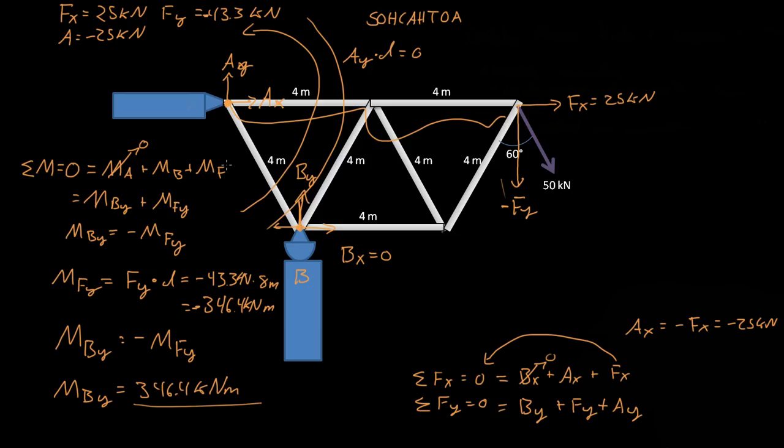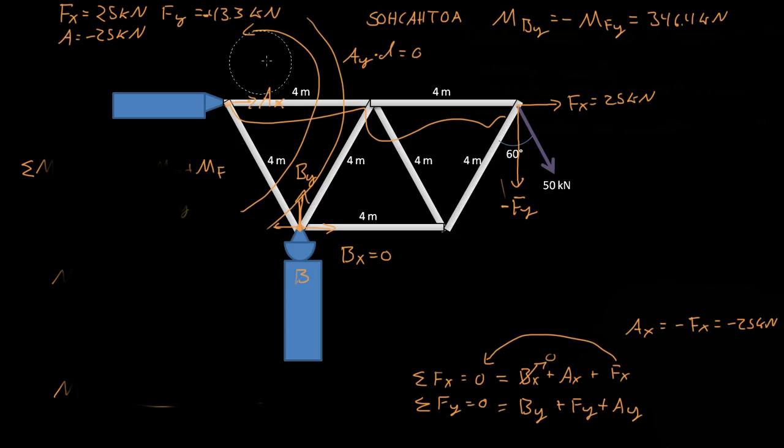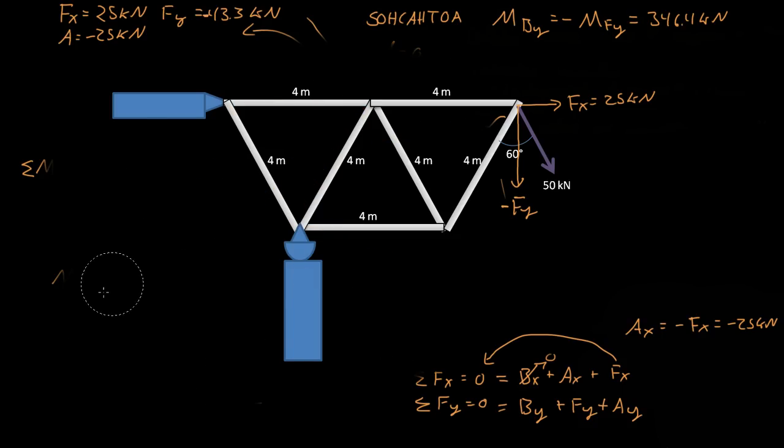So this is really messy so I'm gonna do a little bit of rearrangement. I'm gonna say that moment By is equal to the negative moment Fy which is equal to 346.4 kilonewtons, and we should be able to solve for By.